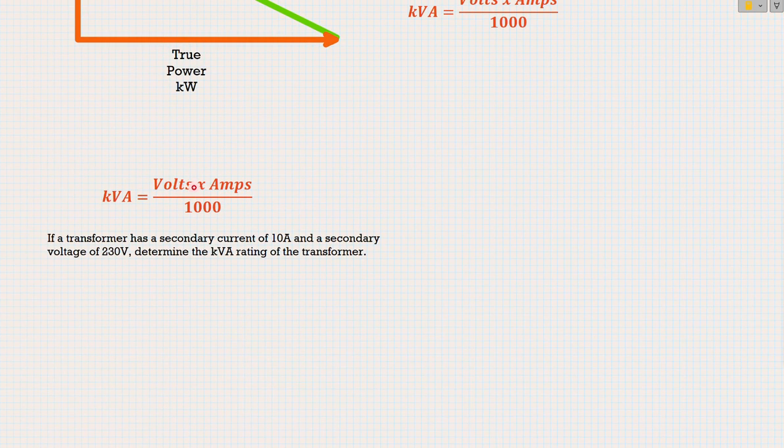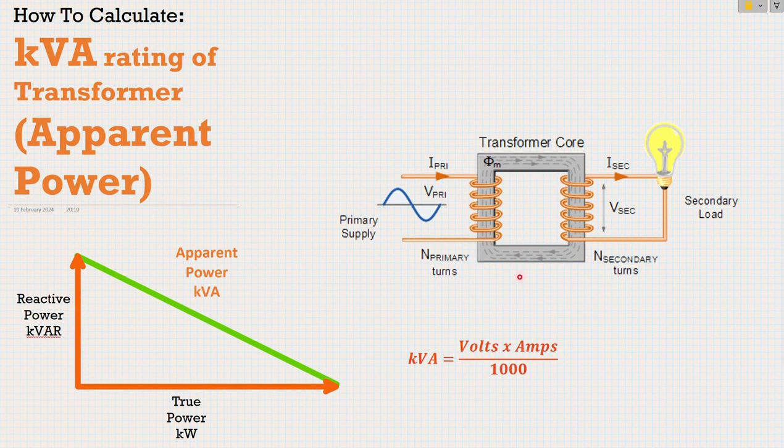Well, let's look at our formula here and go back up to our transformer for a second and look at KVA. So we can see from our formula, KVA, the kilovolt amp rating of our transformer, so how much power it can apparently use or produce, taking into account our true and reactive power elements,